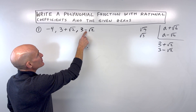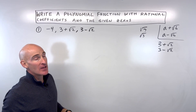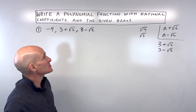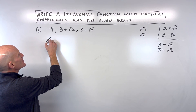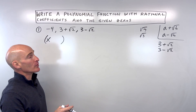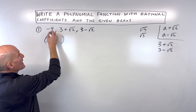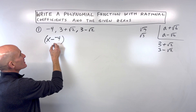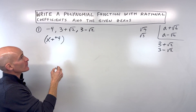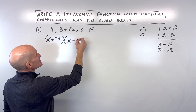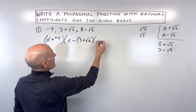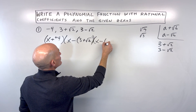Notice we're just changing the sign in between these two terms. So if this was minus, this would be plus. Now we know these are our zeros, and there's a connection between the zeros and the factors of the polynomial. The factors are always going to be x minus the zero. So this is x minus negative four, which is x plus four, then x minus three plus square root of two, and x minus three minus root two.